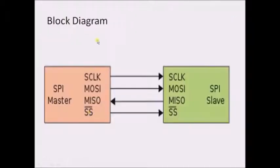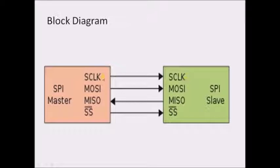In the block diagram, the master generates the clock which is given as input to the slave device. Since both operate at the same frequency, they operate at the same speed. Any changes in the master's clock during transmission are reflected at the slave side, so there is no loss of data in synchronous communication. In asynchronous communication, a stable clock must be provided at both ends; any change in either device results in loss of data. This is the basic advantage of synchronous communication.